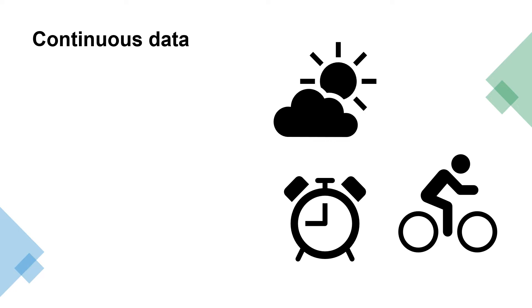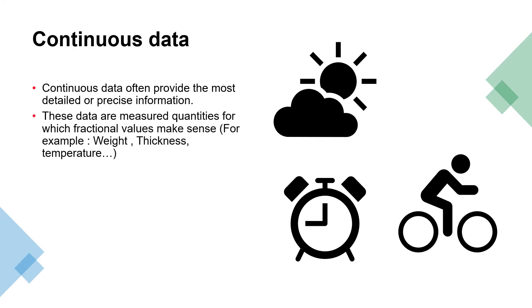The second type of data is numeric. There are two types: continuous and count. Continuous data often provide the most detailed or precise information. These data are measured quantities for which fractional values make sense. For example, time, temperature, and speed are all continuous data.